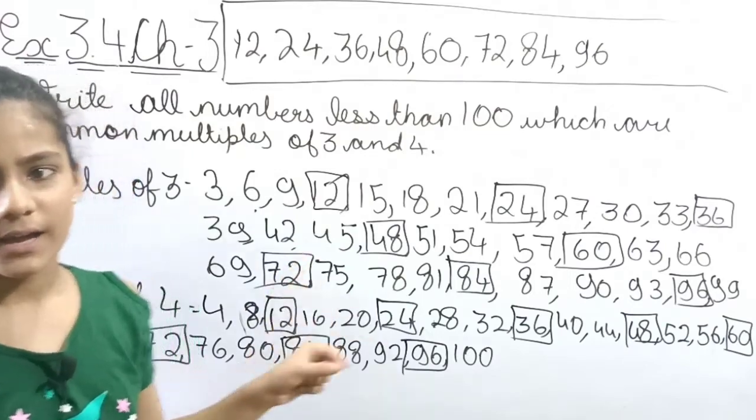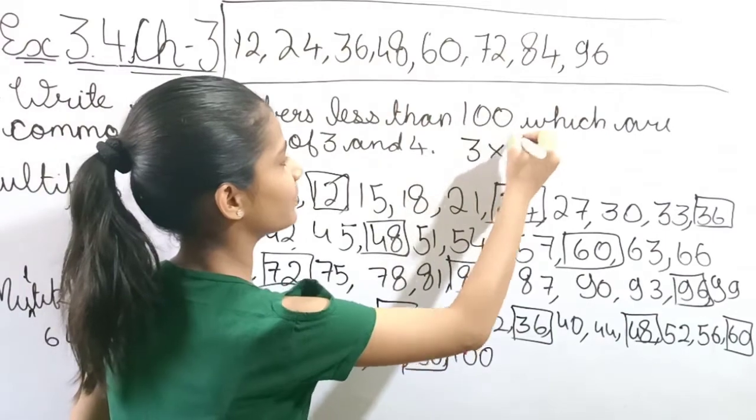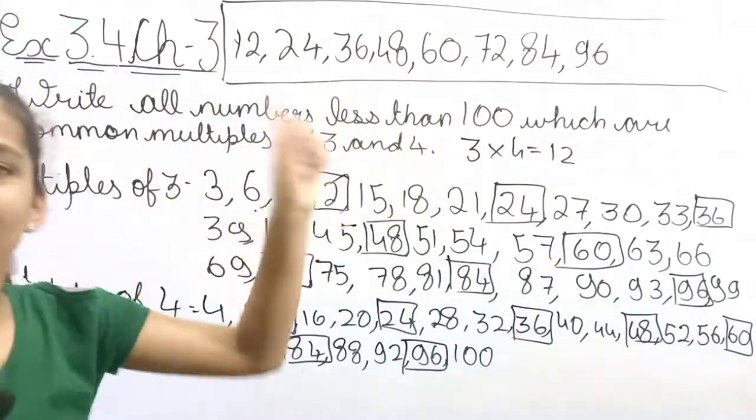If you are missing something, this is a very big question because 3 into 4 is equal to 12. So this is the 12 table.